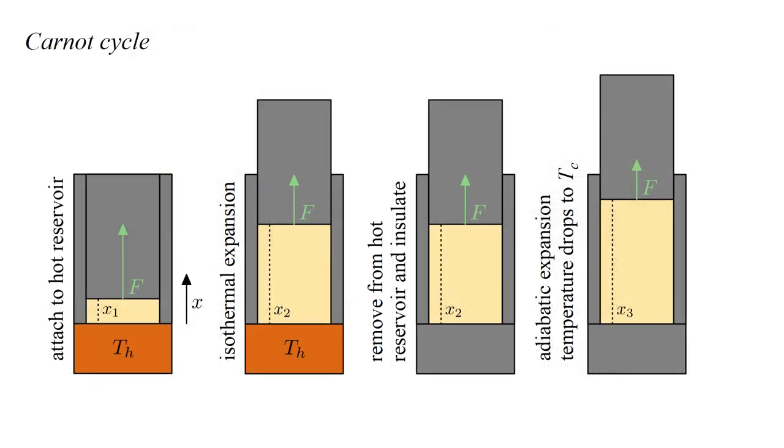Let's review the Carnot cycle. We begin with the gas, the yellow region, maximally compressed and in contact with the reservoir at temperature T hot. It undergoes isothermal expansion, which extracts heat from the reservoir and converts it to work. Then we remove the heat reservoir and insulate the gas. This is followed by adiabatic expansion until the gas temperature is reduced to T cold.